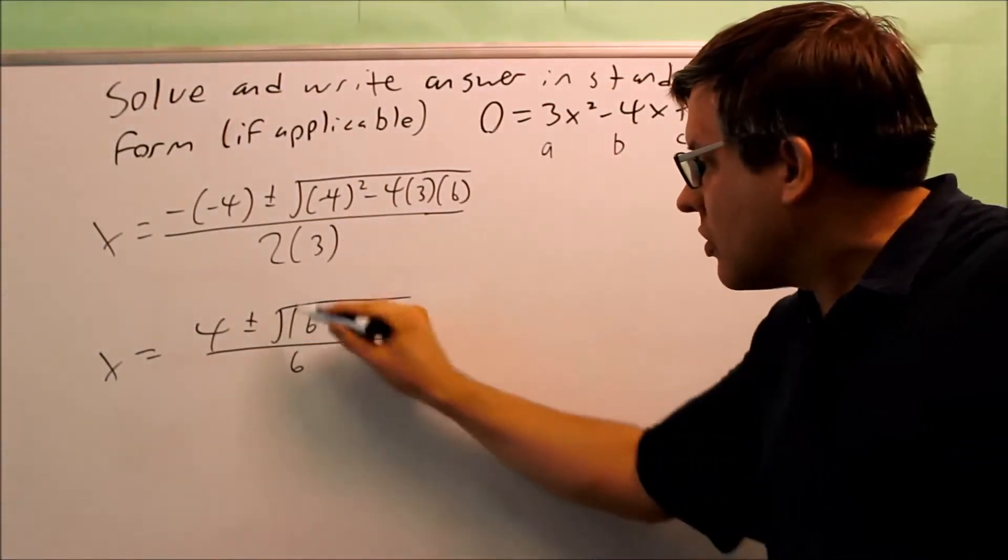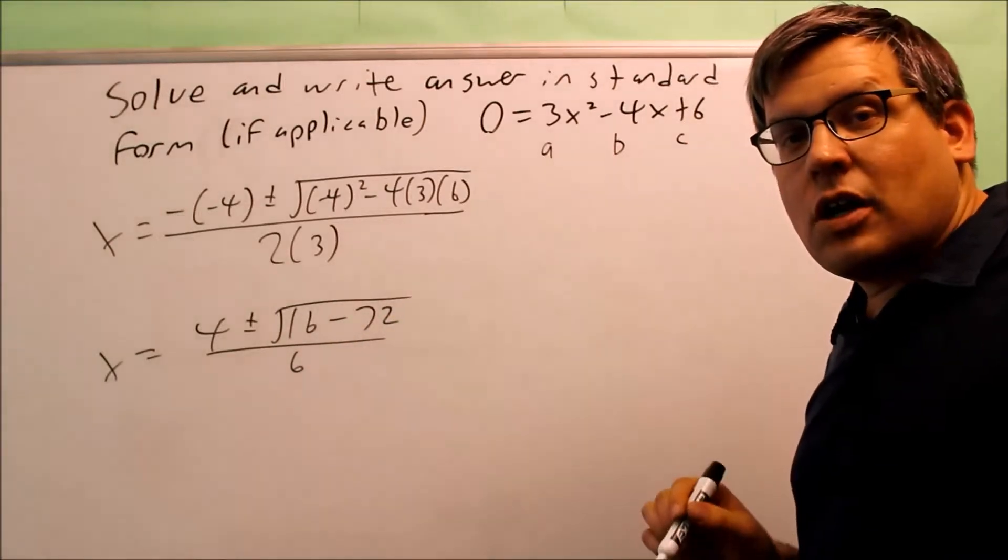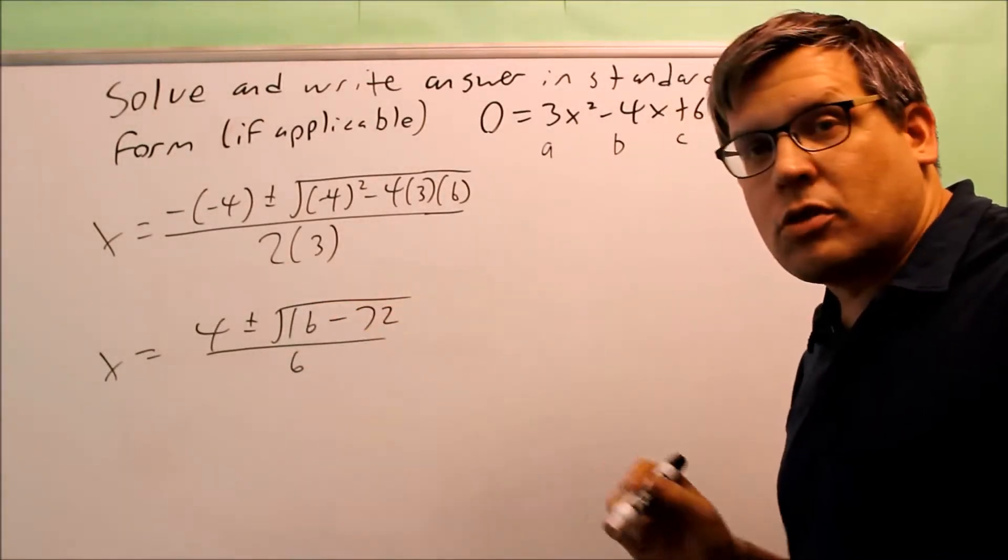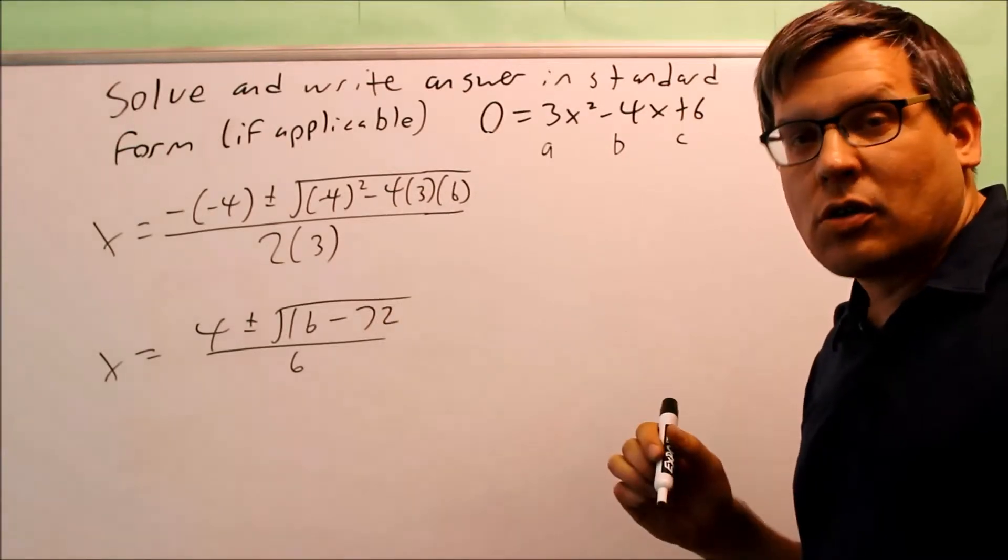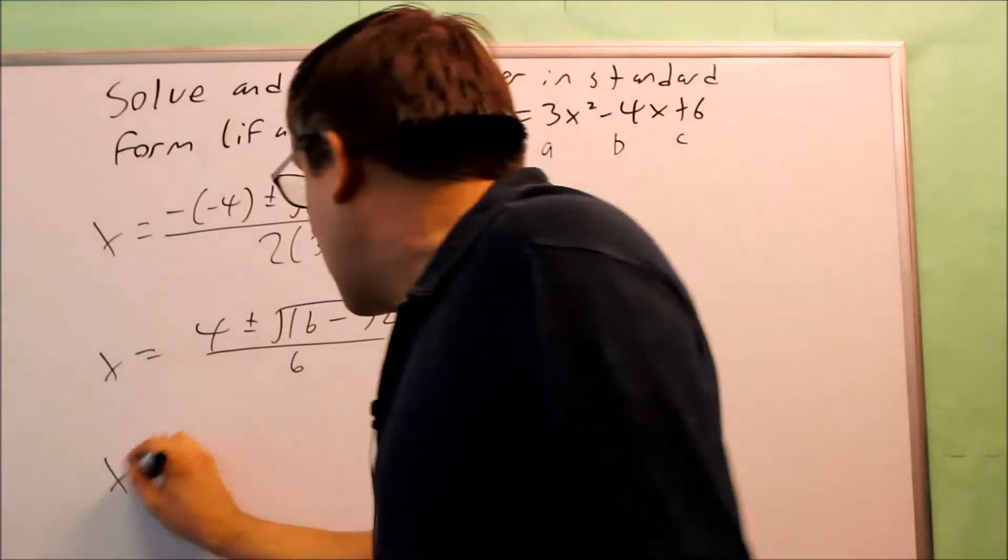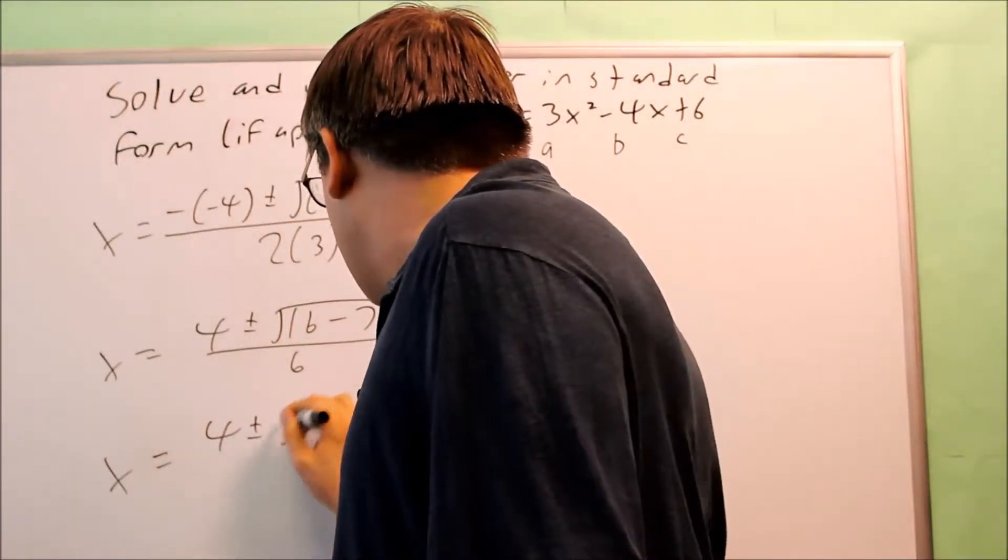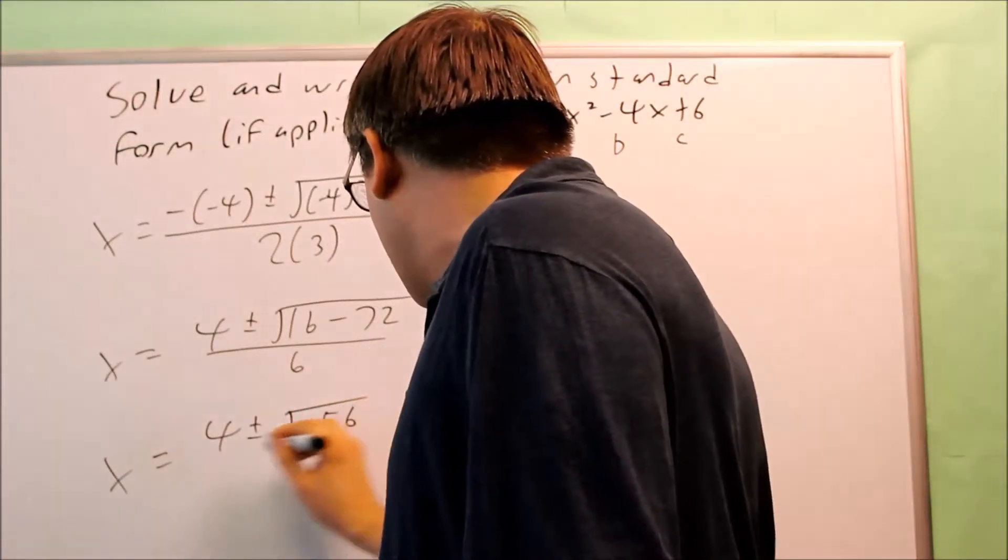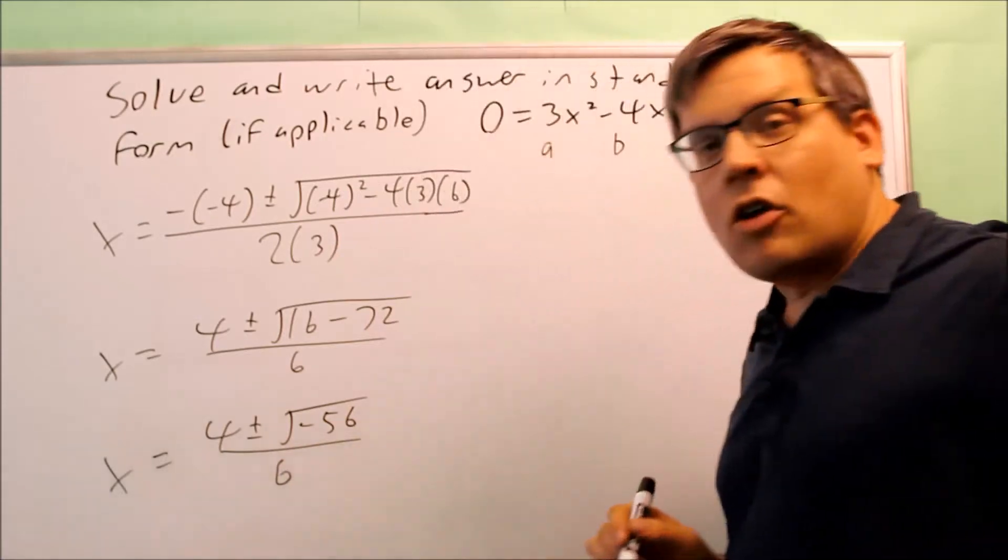We already notice that there's definitely going to be an i involved in this one because this is going to give us a negative number. So whenever you have the square root of a negative number, that's going to involve an i. We want to keep on going. We're going to simplify that inside one. You're going to get negative 56.